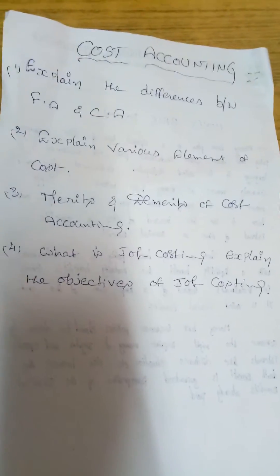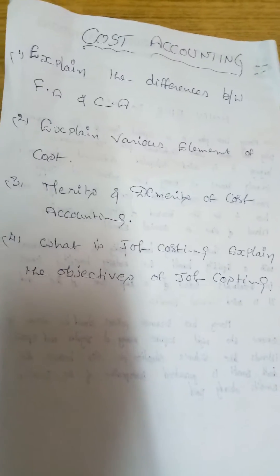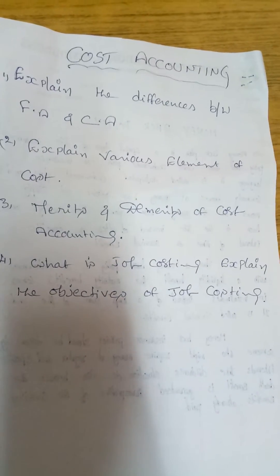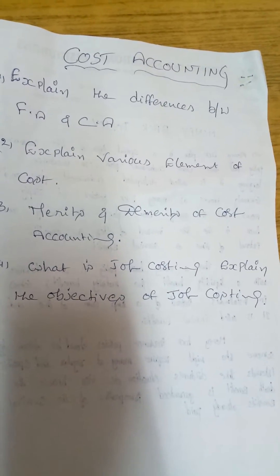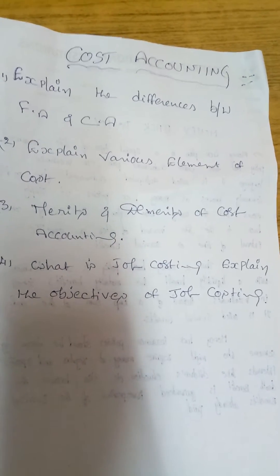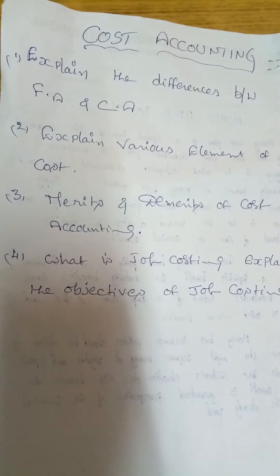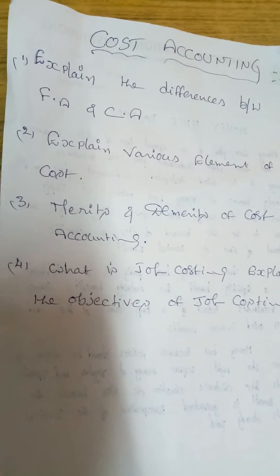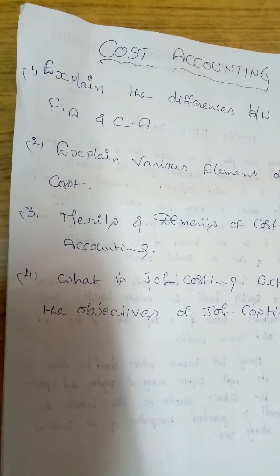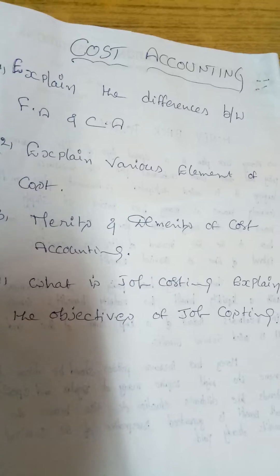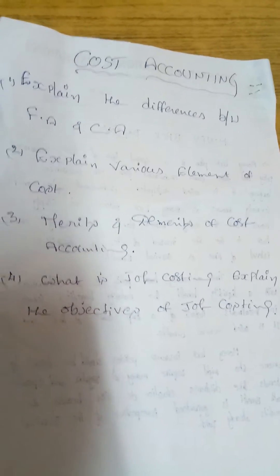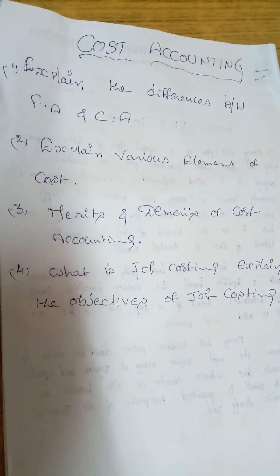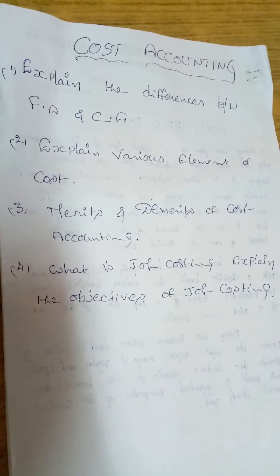Second question: explain the various elements of cost. In cost, you know very well what the elements are — material, direct material, indirect material, labour, direct labour, indirect labour, and overheads. You have to explain clearly with the tabular form.